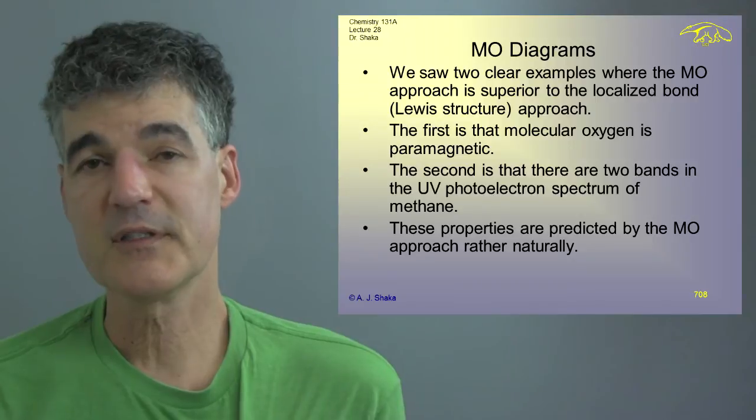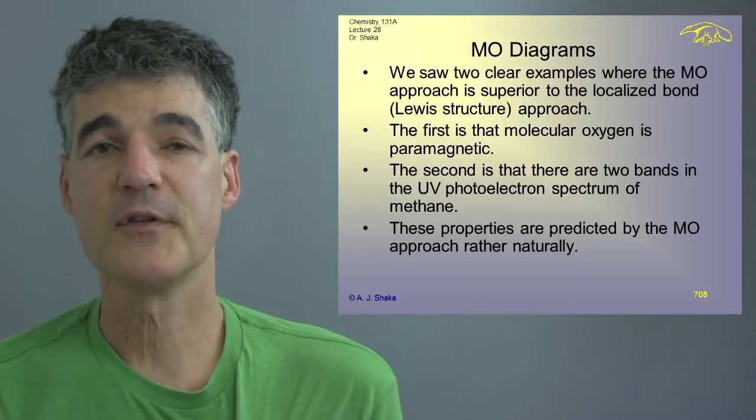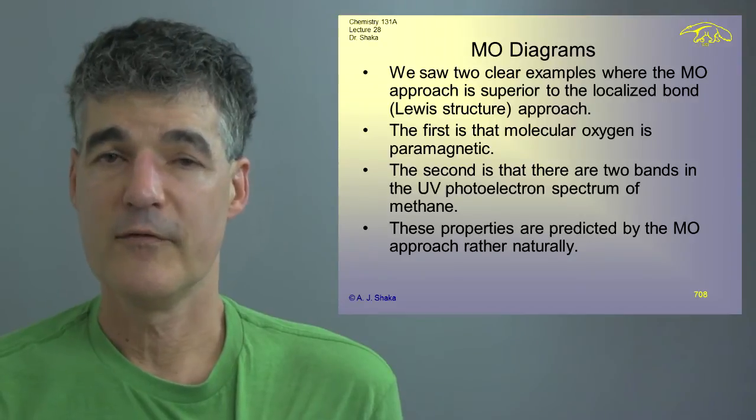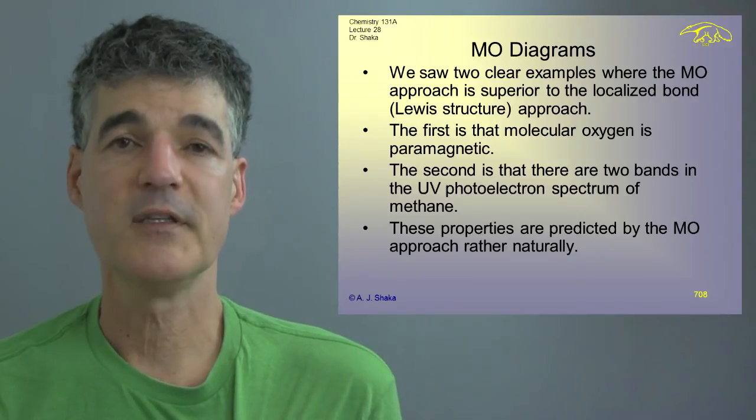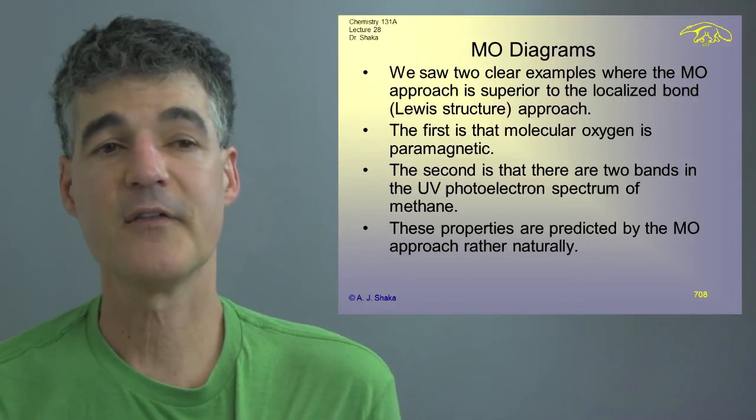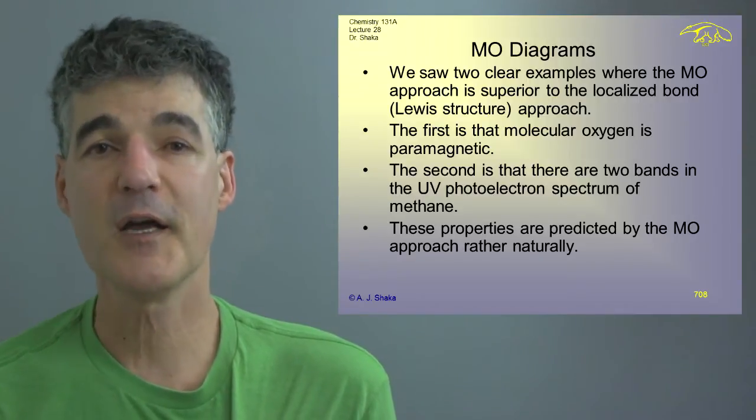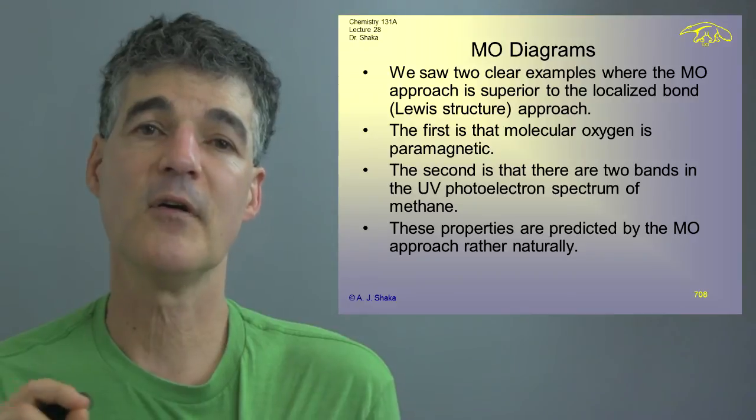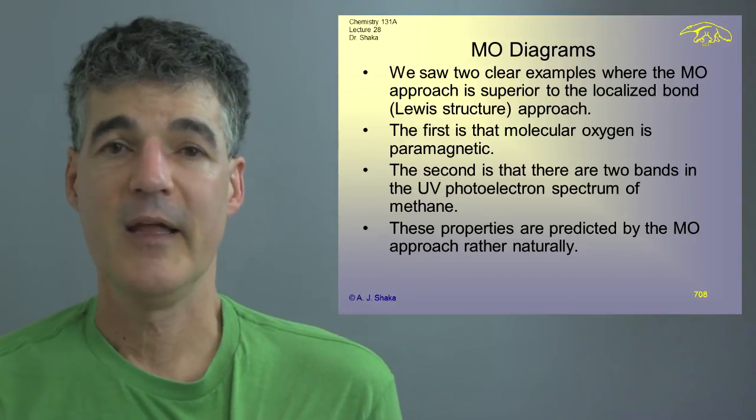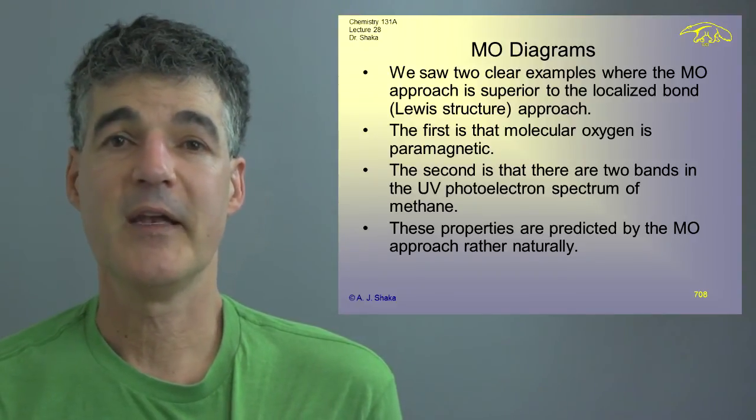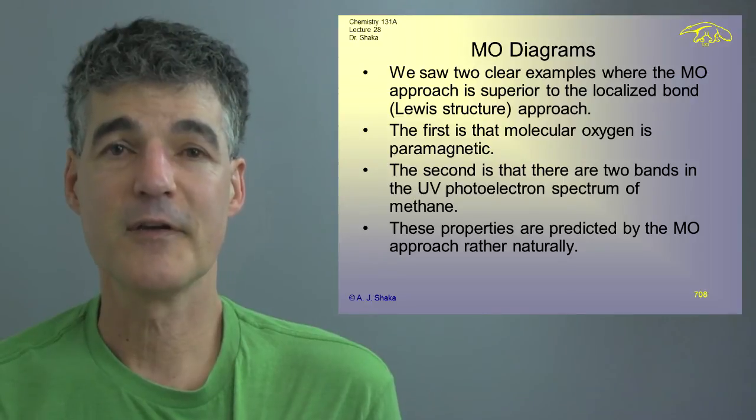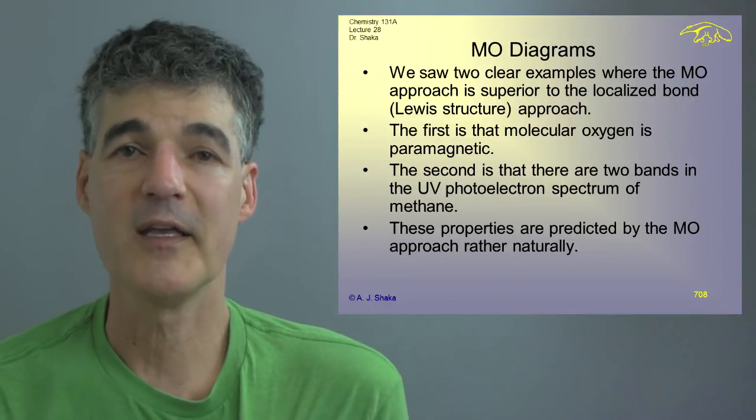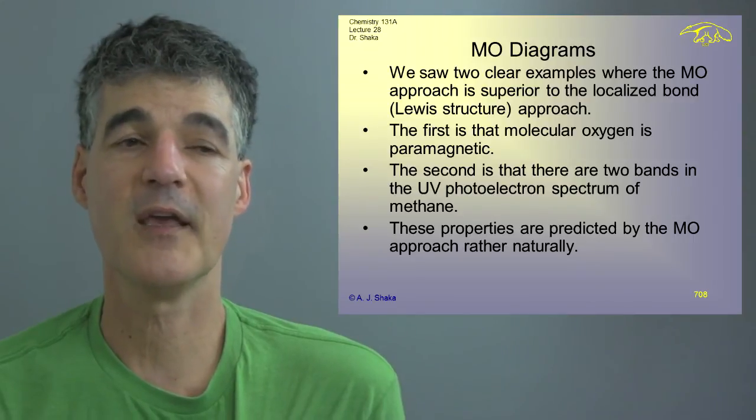And to go back and say, well, I've got four sp3 hybrids and I'm drawing these lines for bonds and so on and so forth, doesn't really explain. And that's very, very difficult to figure out how you're going to explain it. And that's because it's wrong even though it's useful in some cases.